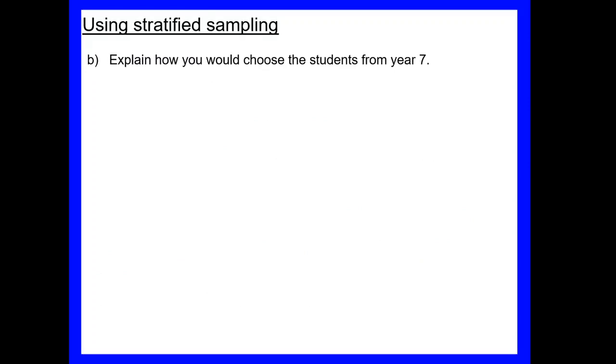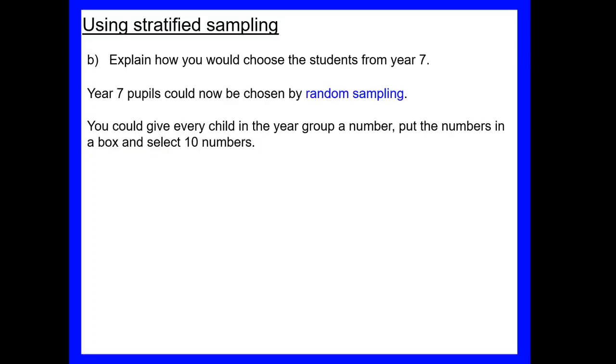Part b then asked us to explain how we would choose the students from year seven. So once we've decided that we needed 10 students from year seven, how are we actually going to identify those seven students? So there are a couple of choices we might make. We might choose them by random sampling, so we could give every child in the year group a number, put the numbers in a box, and then pick 10 numbers out and they would be the students we ask. Or we might try a systematic approach, so perhaps choosing every 20th student from a list of students until we have got 10 students.